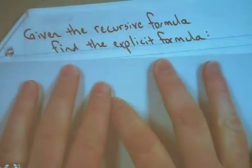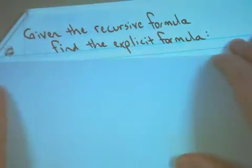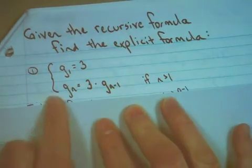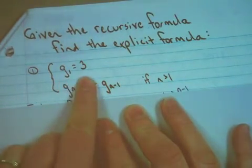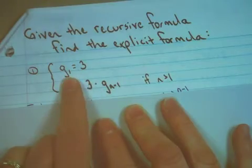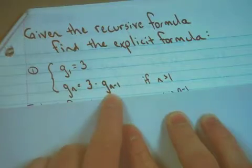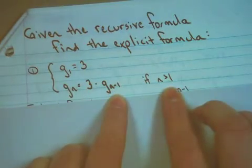Given the recursive formula, I want you to find the explicit formula. So if I give you that g sub 1 is equal to 3, I'm telling you that the first term in the list is 3. g sub n is equal to 3 times g sub n minus 1 if n is greater than 1.